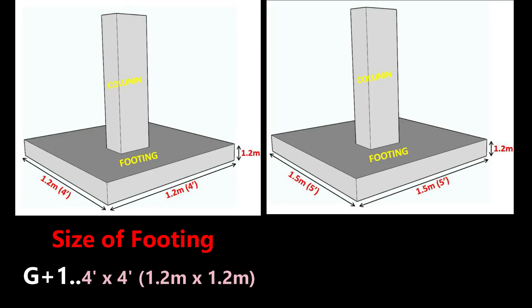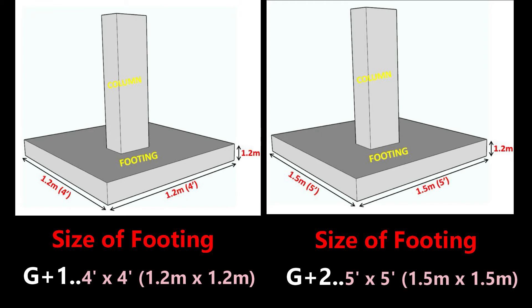The minimum foundation size for G+1, that is a 2-story building, is 4 feet by 4 feet, that is 1.2 meter by 1.2 meter. For G+2, that is a 3-story building, the minimum foundation size is 5 feet by 5 feet, that is 1.5 meter by 1.5 meter, and the minimum depth is 4 feet, 1.2 meters. For G+3 and higher story buildings, consult a structural engineer for building design.